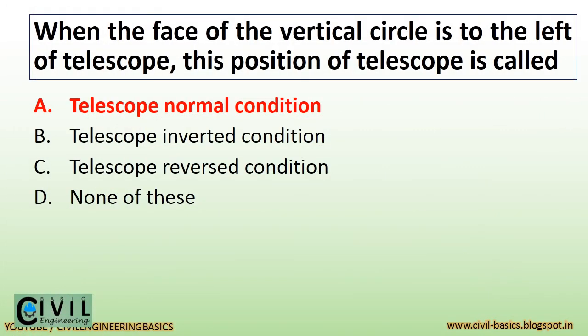When the face of the vertical circle is to the left of the telescope, this position of the telescope is called telescope normal condition.